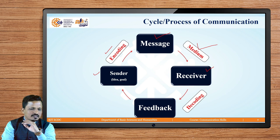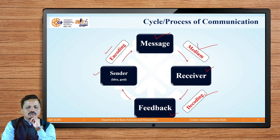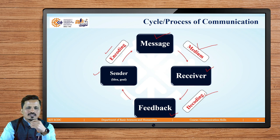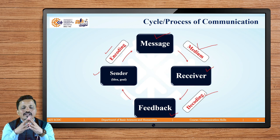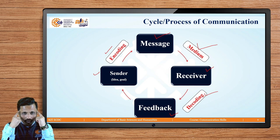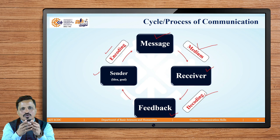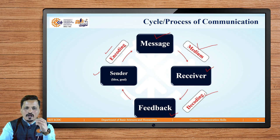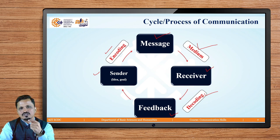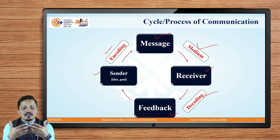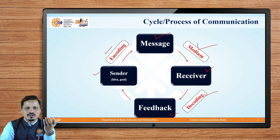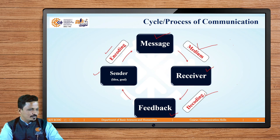The receiver receives that message, tries to decode it, and gives feedback. For example, you as a sender want to call your four friends to meet at 5 o'clock at a coffee shop. You encode your idea by taking your mobile phone and typing a message, calling them, or going door to door if they live close. The receiver decodes the message and gives feedback — they either come for the coffee, ask questions, and eventually you all meet at one place.